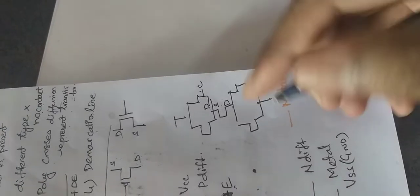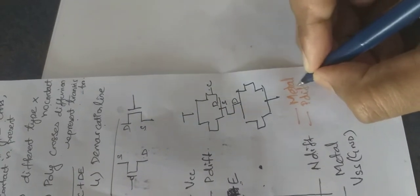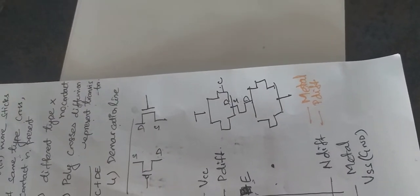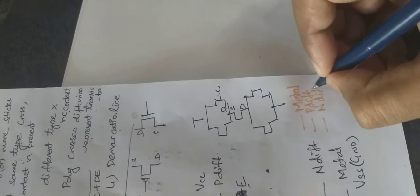Next, there is the P-diffusion layer, which is used as the base terminal for PMOS transistors. There is also an N-diffusion layer, which is used for NMOS transistors. Finally, there is the polysilicon layer.